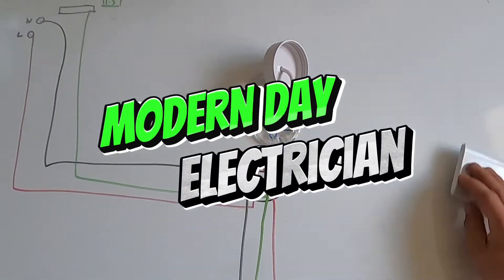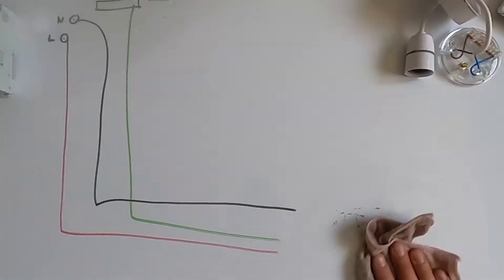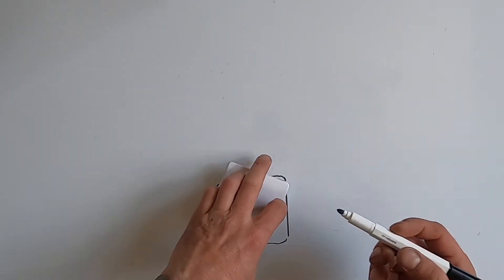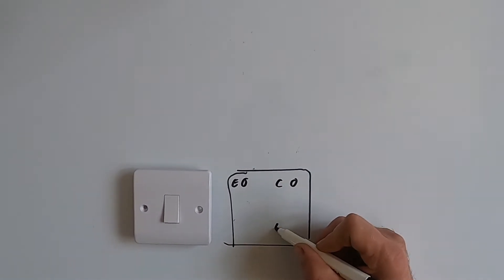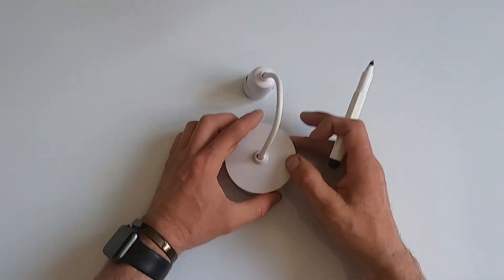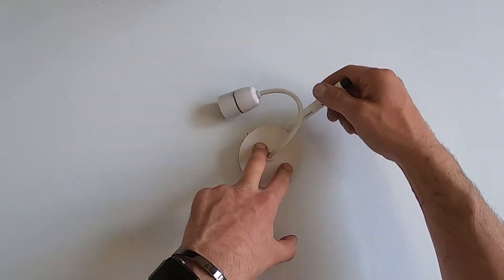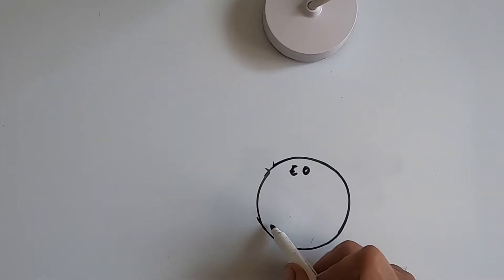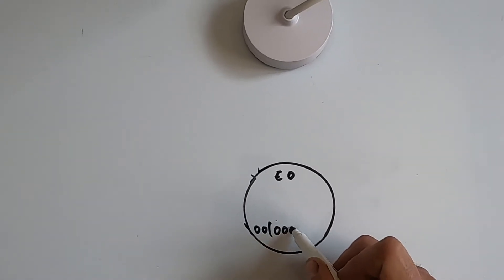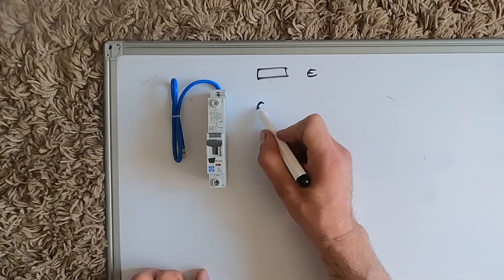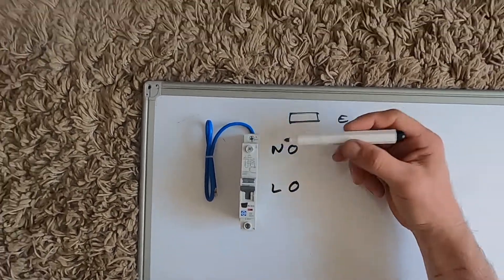But you are modern day electricians, so let's do this a better way. So again we'll have our switch - earth, common, L1 - then we'll have our ceiling rose with our earth and then our three, two, one, two, three, one, two, three. And then our fuse board, so we're going to have our earth block in there again, our neutral, and our live, which obviously come out of that RCBO there.